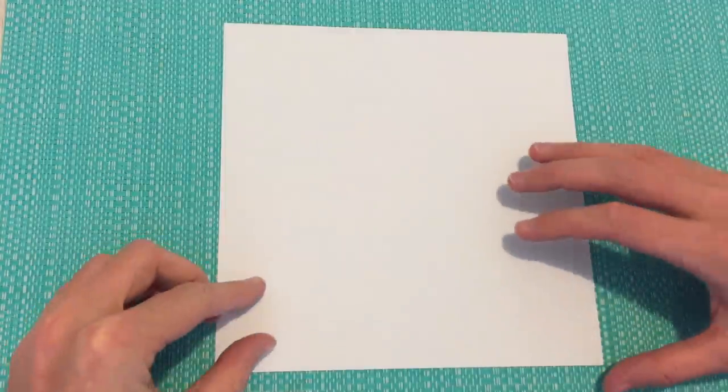Today we're going to be making a paper circle glider. We're starting with a square sheet of paper. If you only have A4 printer paper, have a look at our video on how you can cut that down to size.